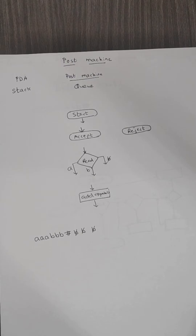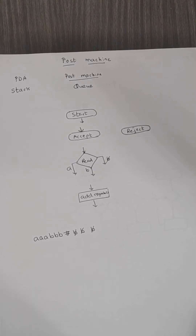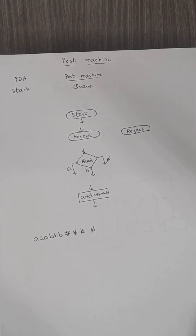Let us start with another type of machine called a Post Machine. In the case of a Post Machine, instead of using external stack memory for remembering things, we are going to use a queue. The queue used here is the tape on which we have put the input symbols — on that tape only we are going to write the contents, and that will work as a queue for us. The major difference between pushdown automata and Post Machine is: pushdown automata uses a stack as memory, and Post Machine uses a queue as memory.